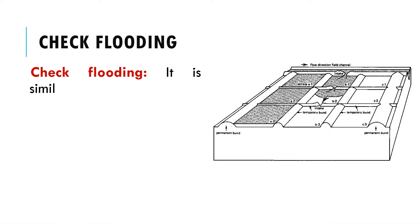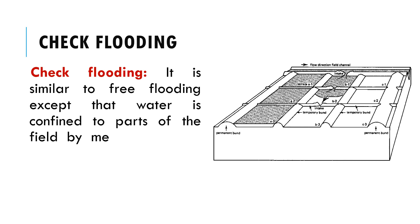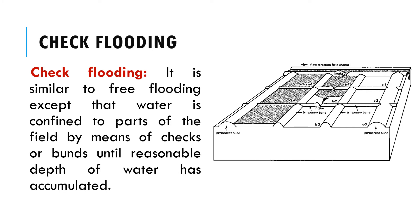Check flooding is similar to free flooding except that water is confined to parts of the field by means of checks or bunds until a reasonable depth of water has accumulated. After accumulating within the area, the water is then allowed to spill over into the next check. In check flooding, the crop area is divided into plots which are relatively leveled by checks or bunds. Water from field channels is allowed to enter each plot or check basin and the plots are flooded to the required depth. It is suitable where a relatively large amount of water is available and the land is nearly level and highly permeable.